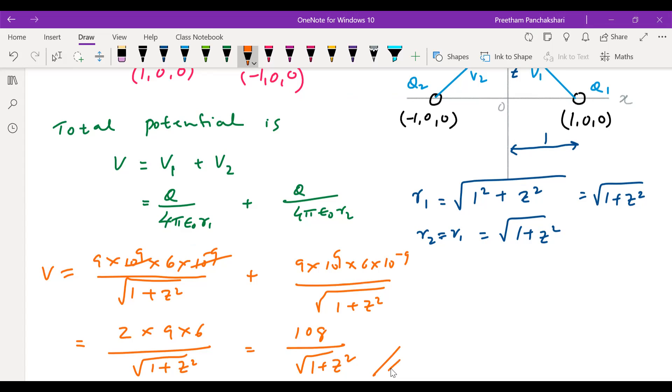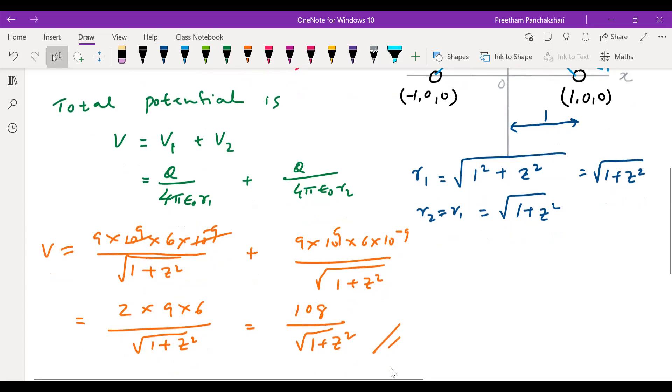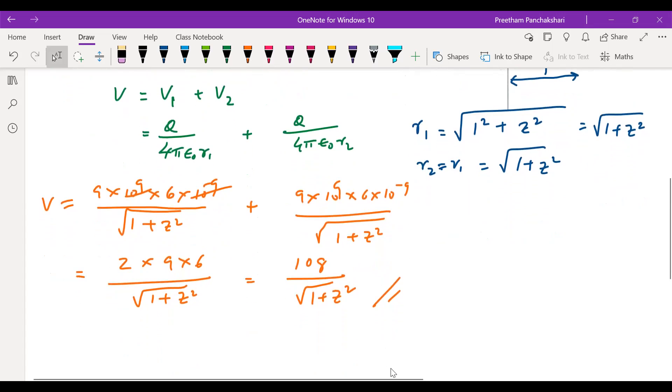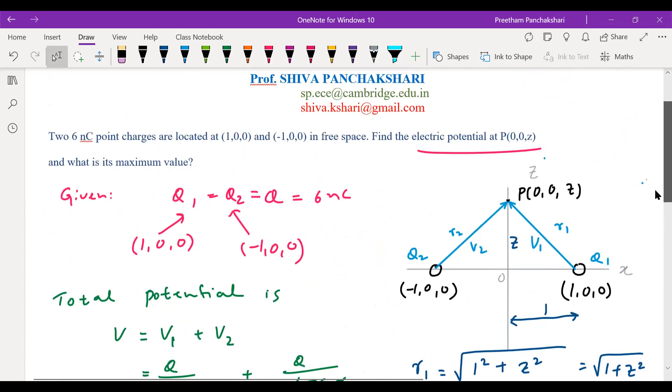So this is the potential at the given point (0,0,z). Since the z component is not mentioned in the numerical, z remains that itself. This is the expected answer. Let us see what else is left out.